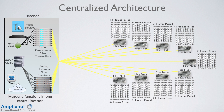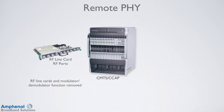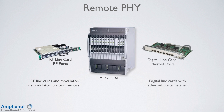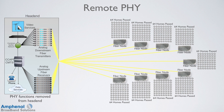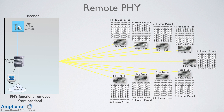Looking back at the Node Plus Zero architecture and other traditional cable architectures, all the signals are sent, received, and processed at the head-end — this is called the centralized architecture. With Remote PHY, the RF line cards and modulator-demodulator function are removed from the CMTS-CCAP equipment and replaced with digital line cards that have Ethernet ports installed. The digital line card puts out a 10-gigabit digital Ethernet signal, removing all of the RF cabling, splitting, and combining from the head-end.